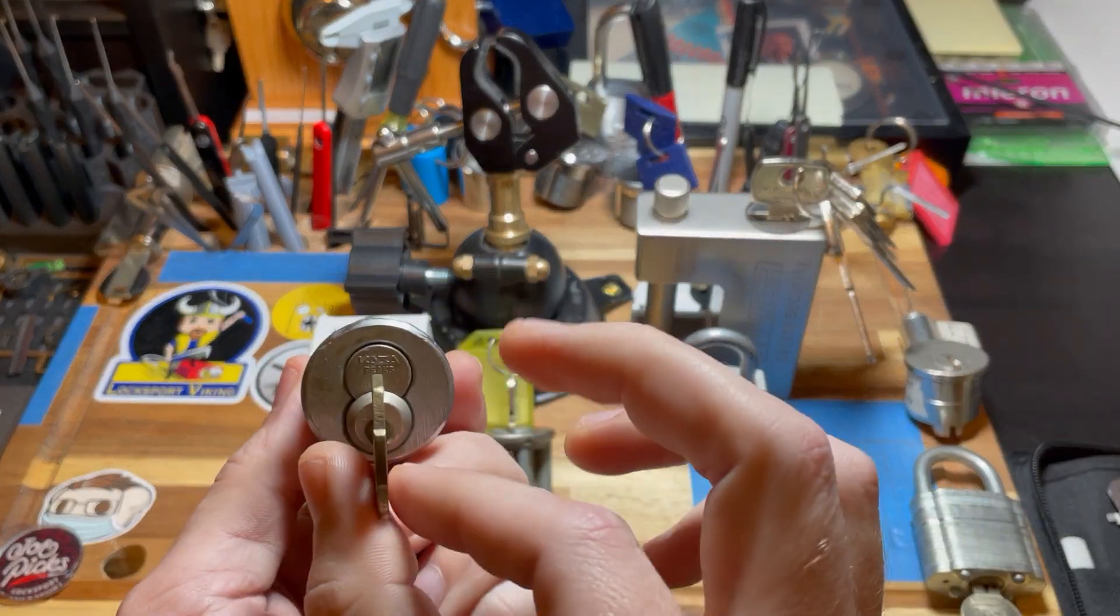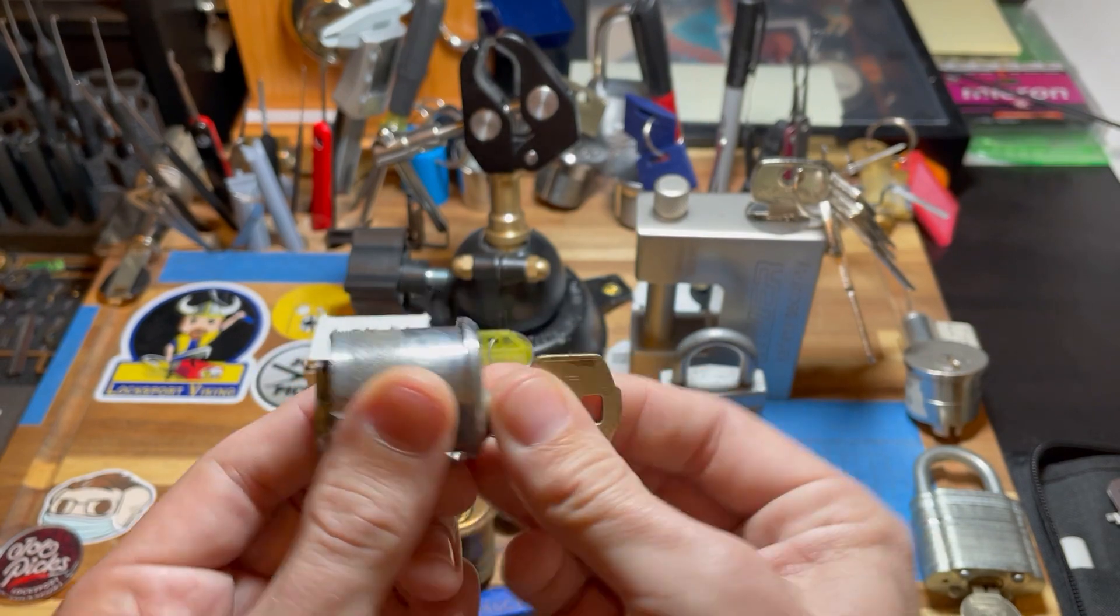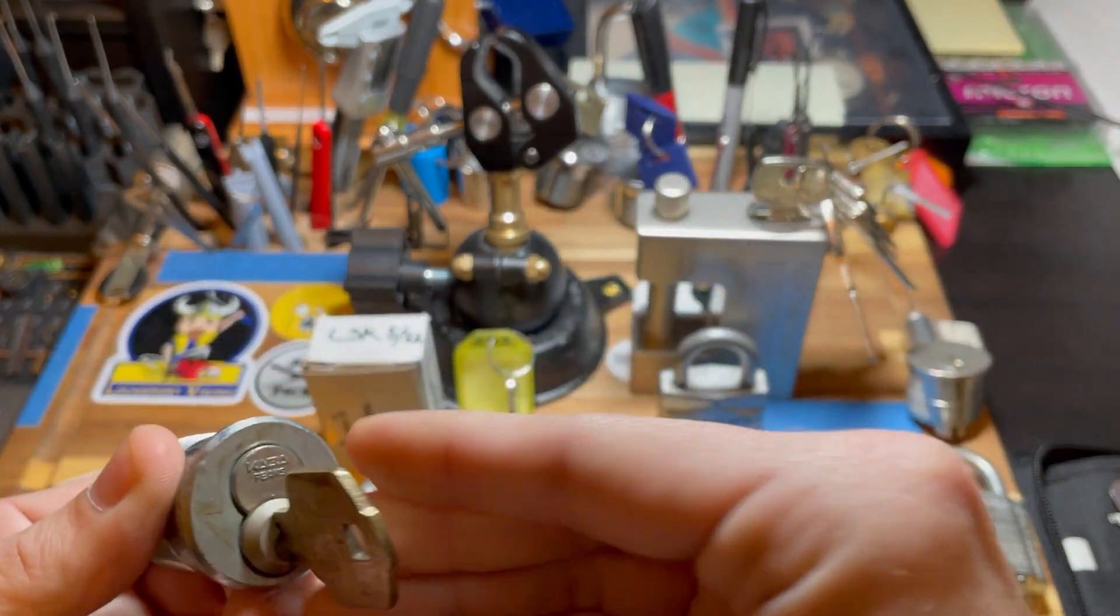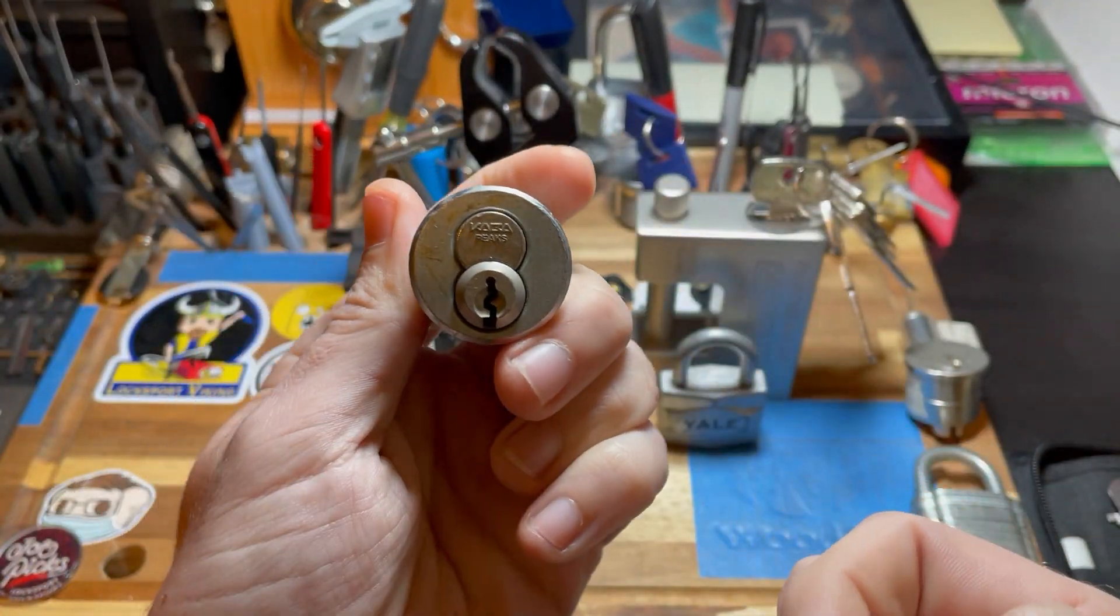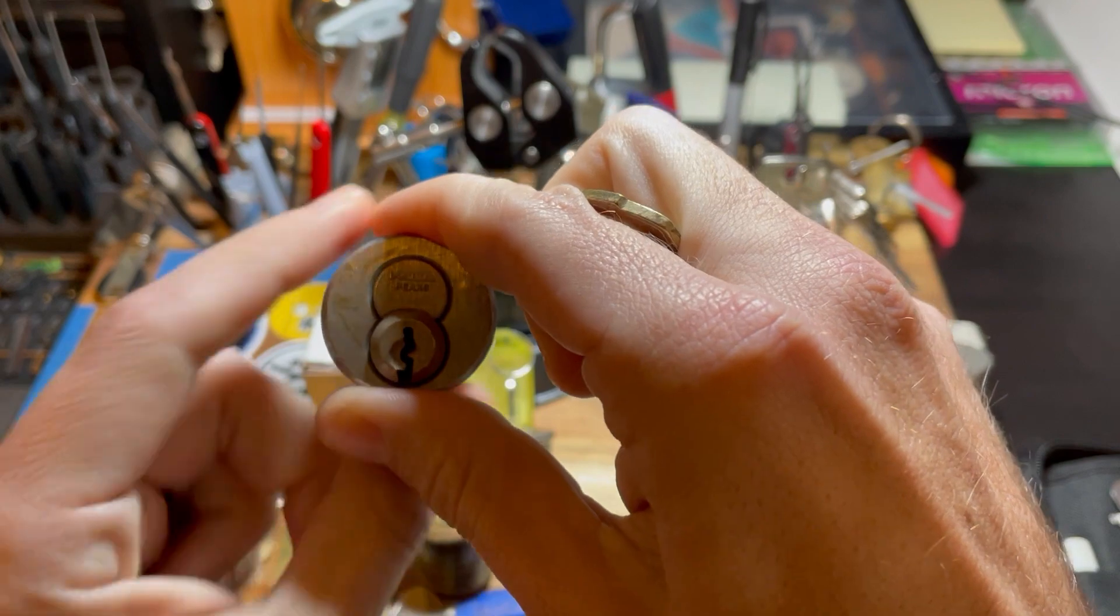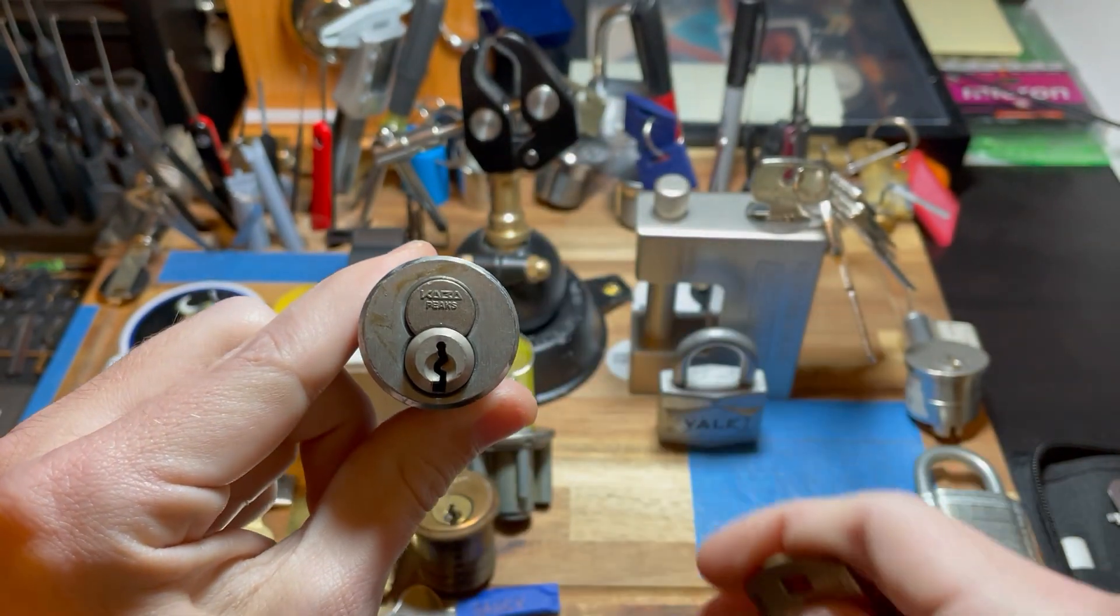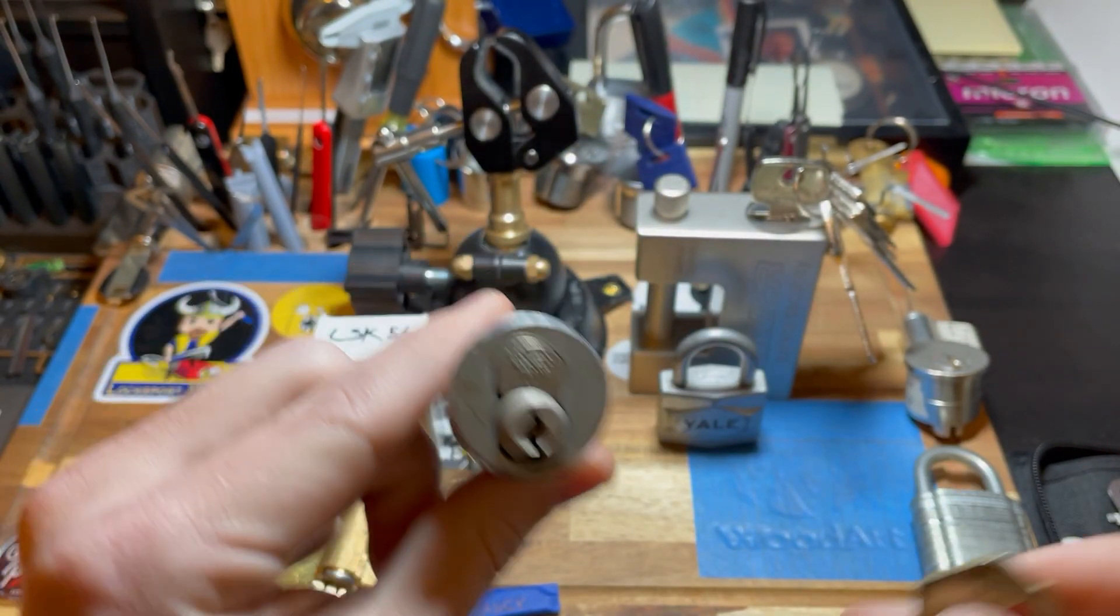We've got a Cava Peaks here. We've got a nice mortise cylinder, and it has a key. Let me see if I can get it out. There we go. It's got a key and a tailpiece. Look at that. It's pretty nasty, too.